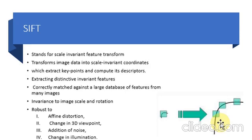So corner detectors are not scale invariant. A new algorithm, Scale Invariant Feature Transform, has been published which extracts key points and computes their descriptors. This algorithm is invariant to image scale and rotation. It is robust to affine distortion, change in 3D viewpoint, addition of noise, and change in illumination.